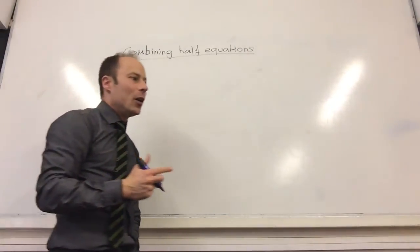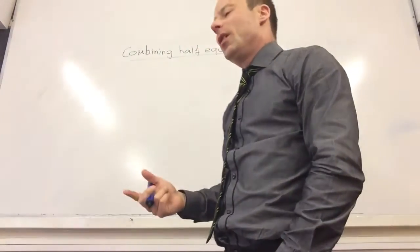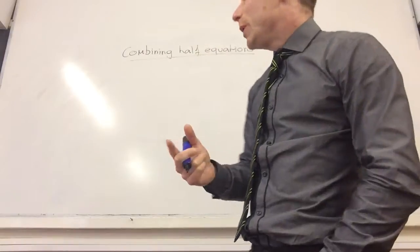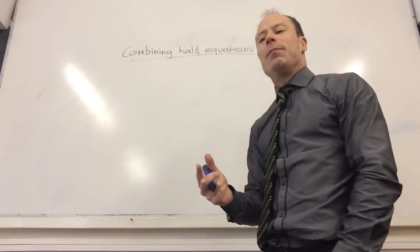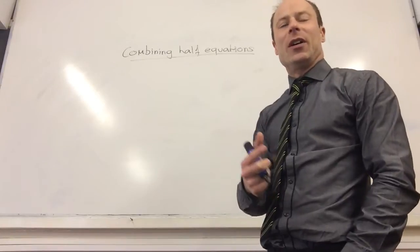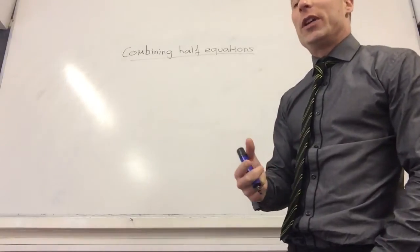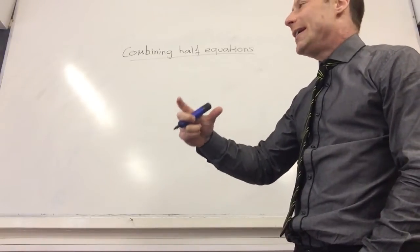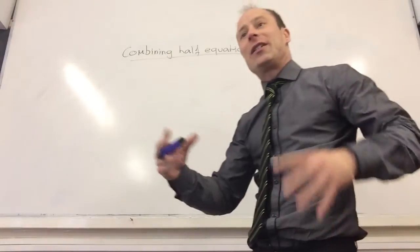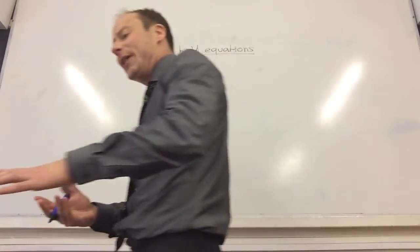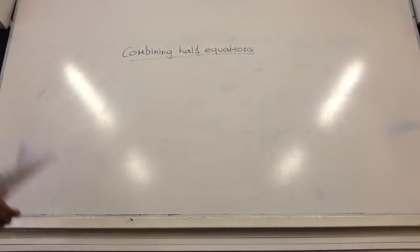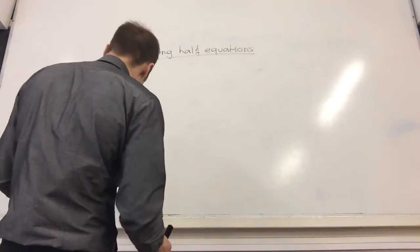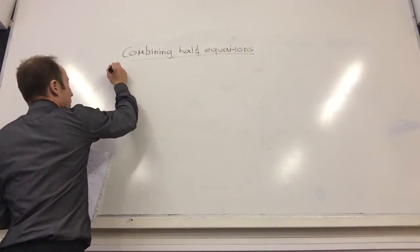We'll come back and do this again a little bit later on once we've done more on electro potentials, but we're just going to do the basics about how we combine two half equations together to make an overall equation. So we've worked out how to get the half equation from a reactant and a product. Now if I give you two half equations, how can you get back to the overall equation? Let's go through some rules and then do a couple of examples.